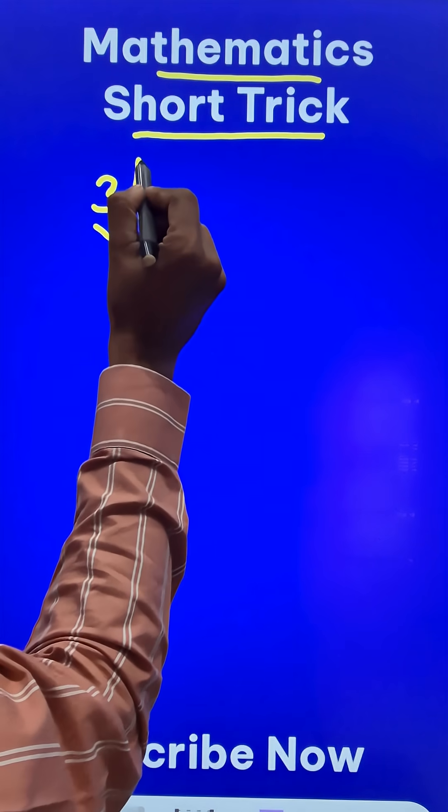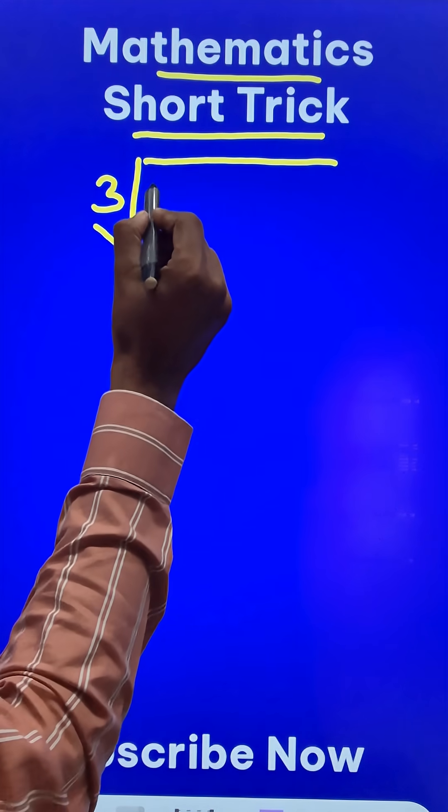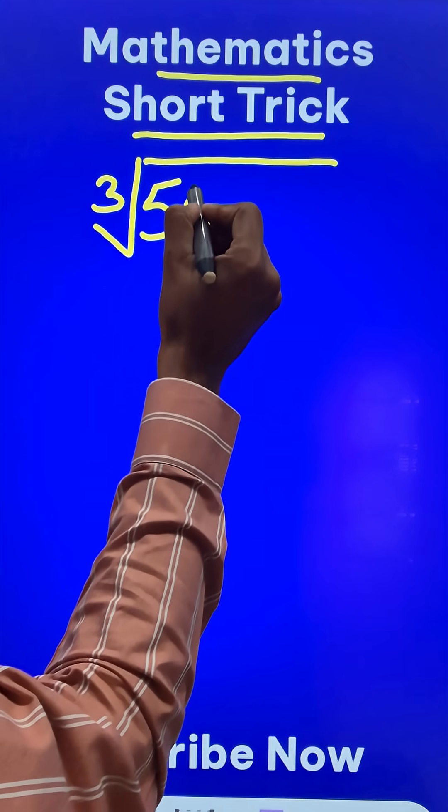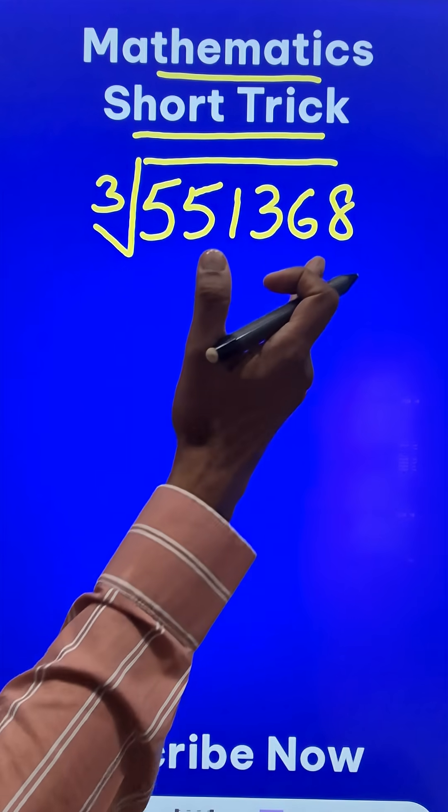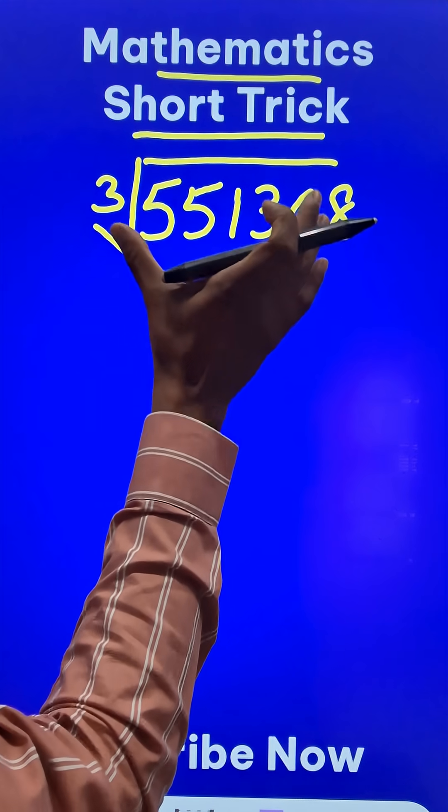Suppose you need to find the cube root of a big number, a six-digit number like 551368. Now that's a big six-digit number, and I have taken a perfect cube number.